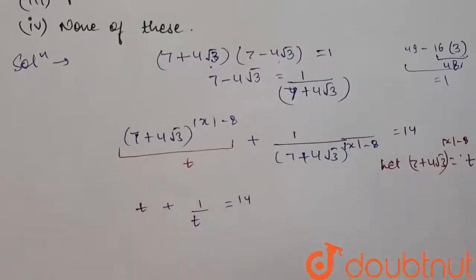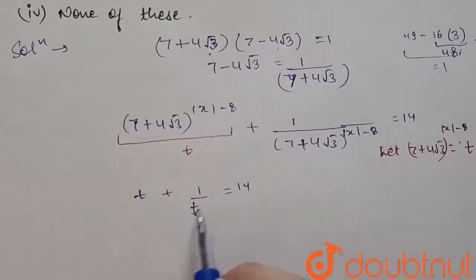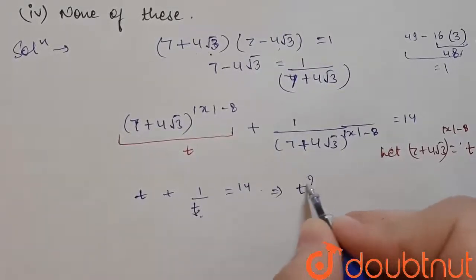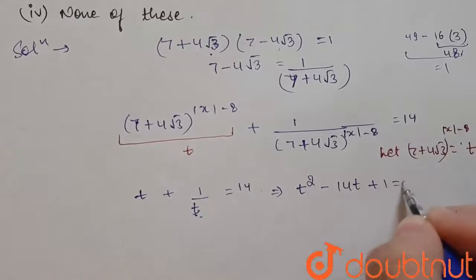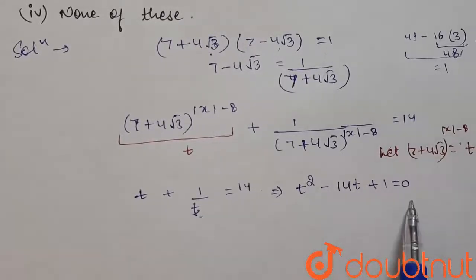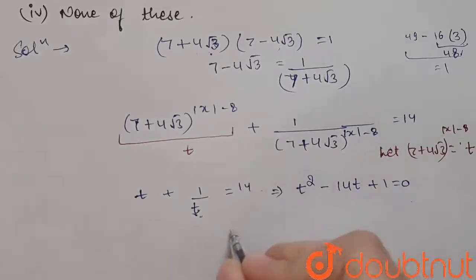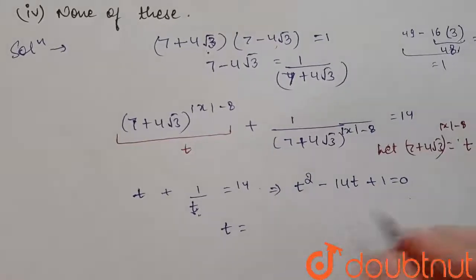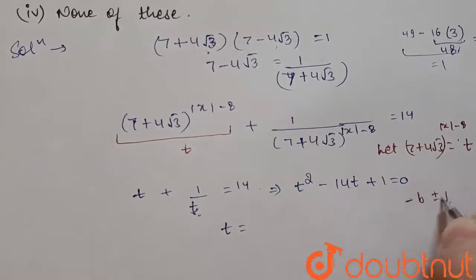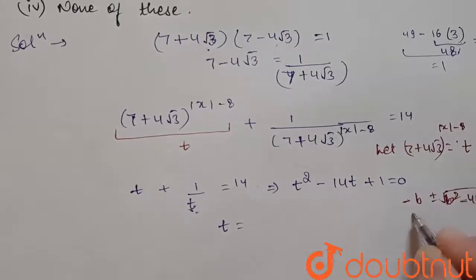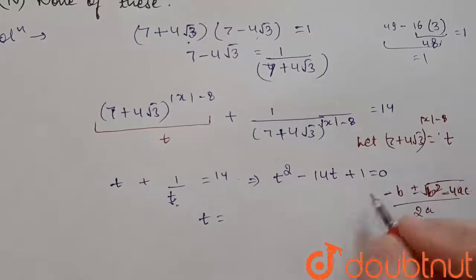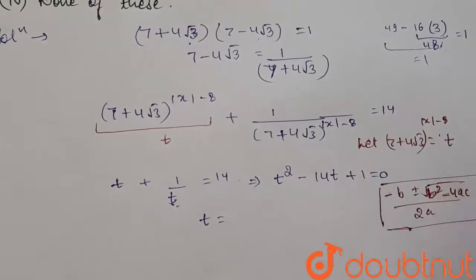Multiplying through by t, we get the quadratic equation t² − 14t + 1 = 0. To find the roots of this quadratic equation, we use the quadratic formula: t = (−b ± √(b² − 4ac)) / 2a.